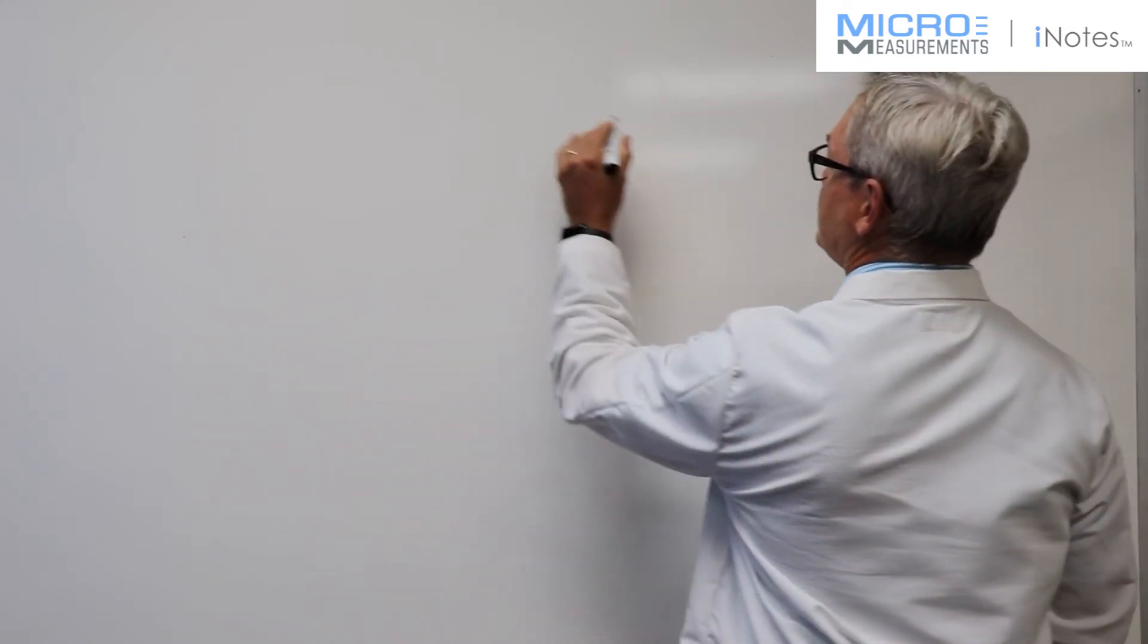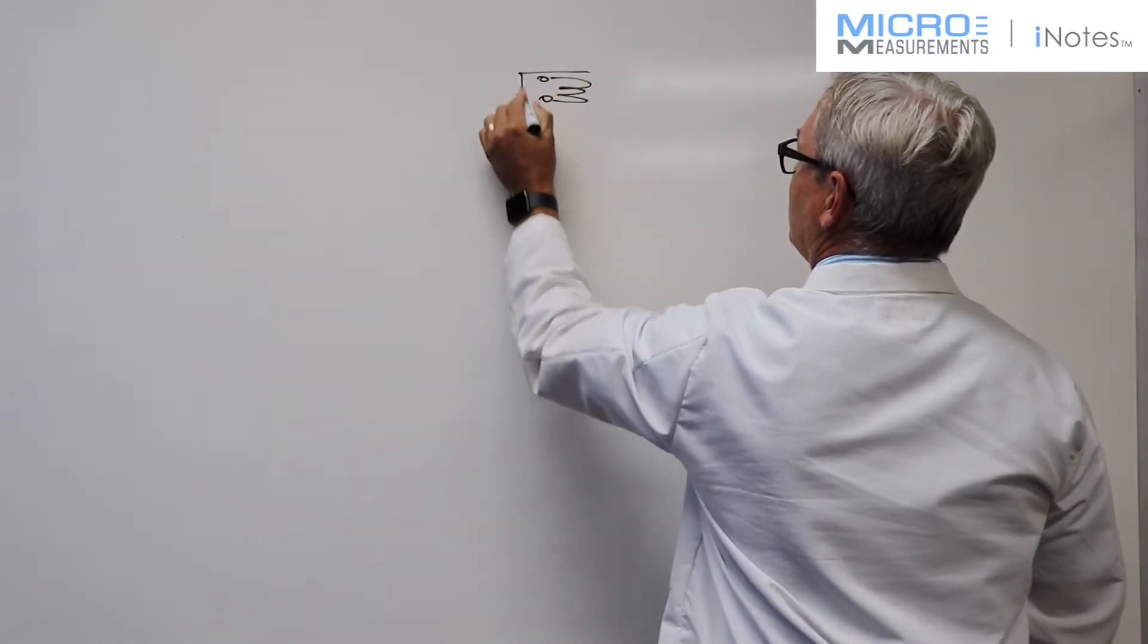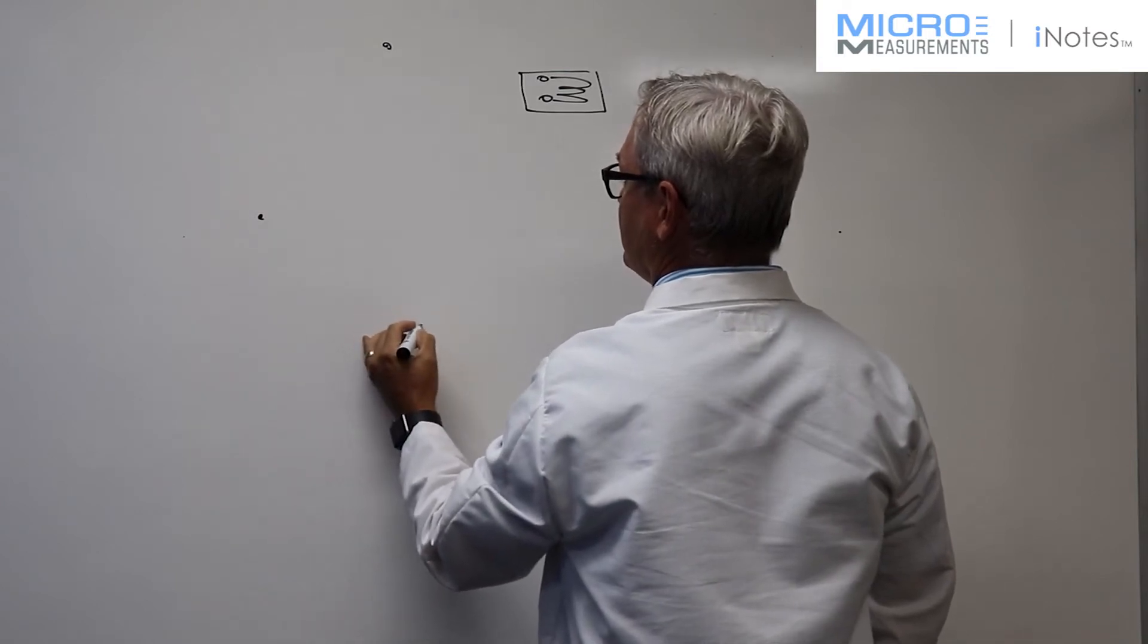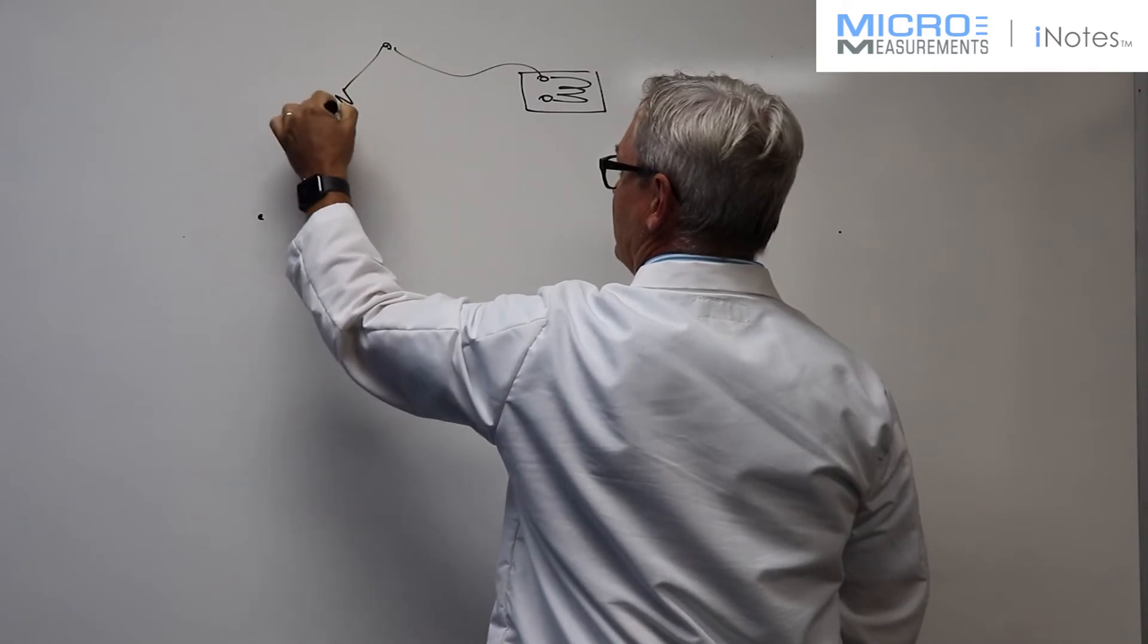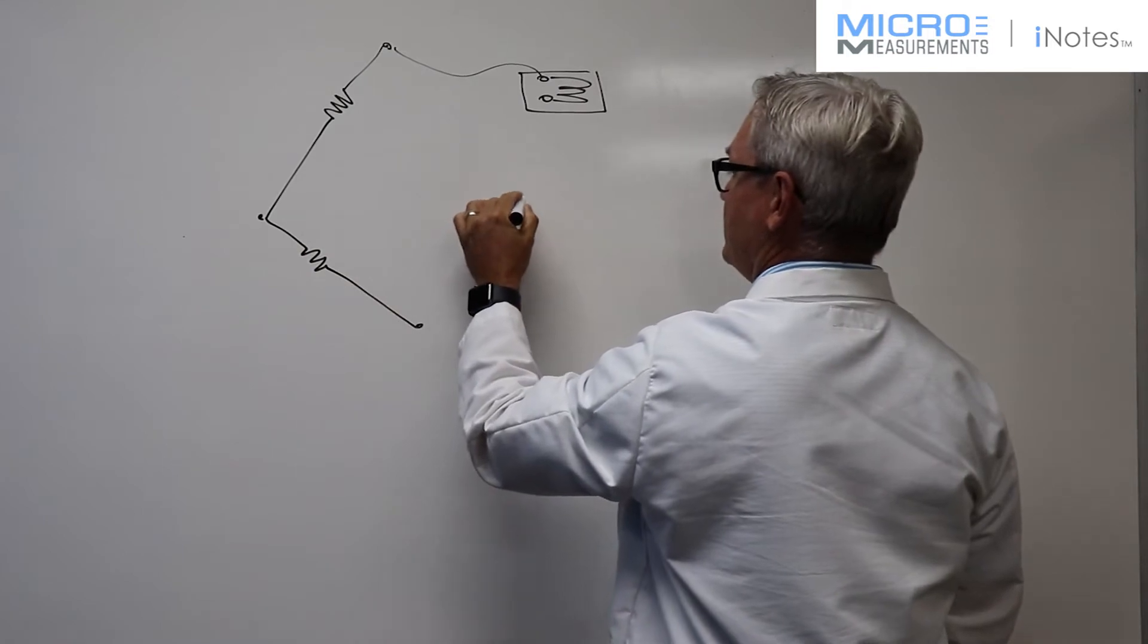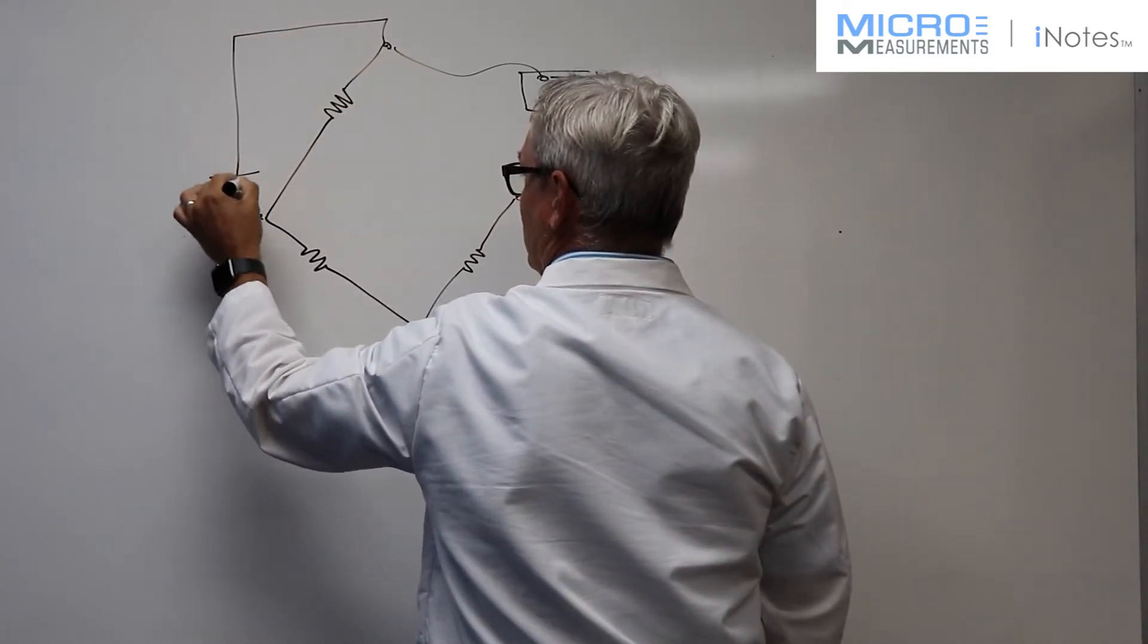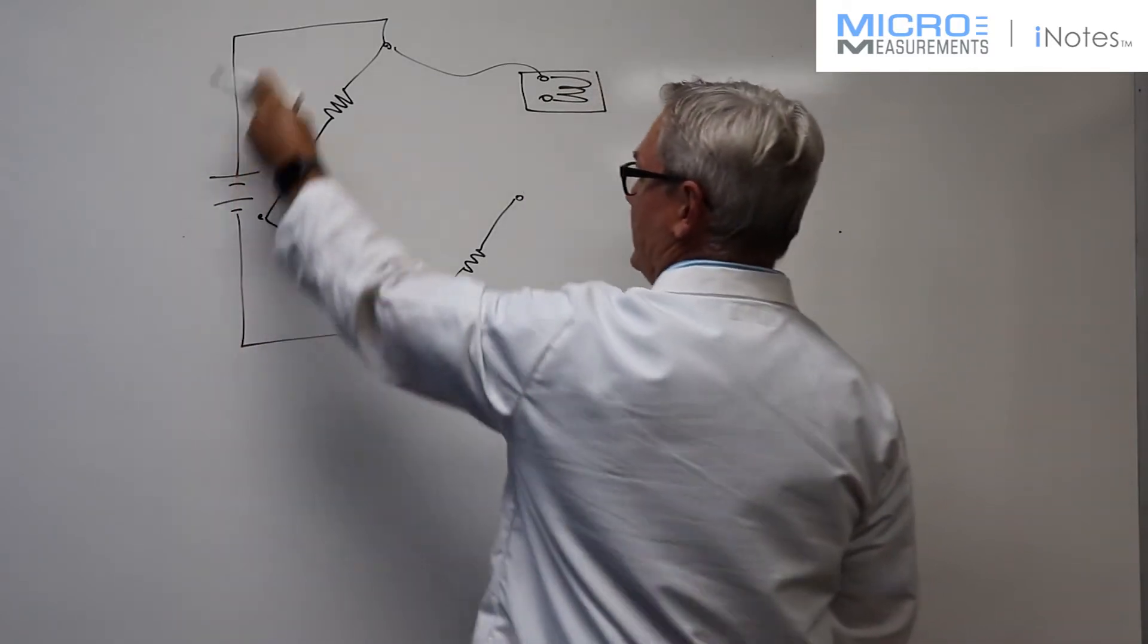First, I'm going to draw a Wheatstone bridge with a single strain gauge. There's my strain gauge, and I'm going to draw the Wheatstone bridge. These are the bridge completion resistors.